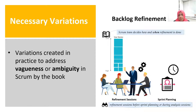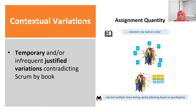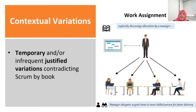Next, we have contextual variations. These are temporary or infrequent justified variations that contradict Scrum by the Book. The Guide does not prescribe how many items should be assigned to individuals, but primarily states volunteering one task at a time. In practice, we observed that multiple items were selected during sprint planning meetings based on individual expertise, preferences, or specializations. A second example is work assignment — both the Guide and Primer explicitly discourage allocation by a manager. In practice, the manager delegates urgent high-priority tasks to the most skillful person in the team for faster delivery, as a norm.